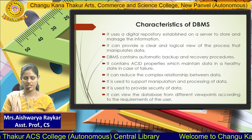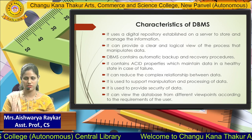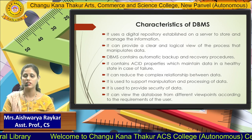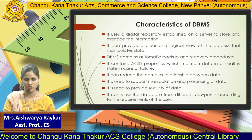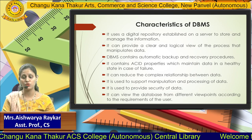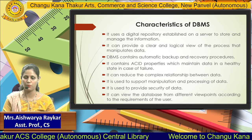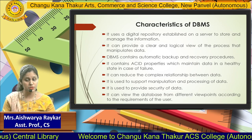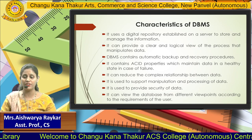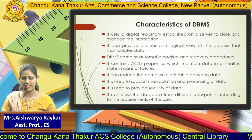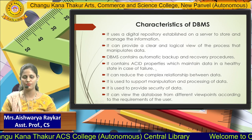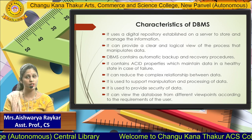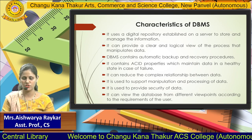Now let's have an overview of the characteristics of the database management system. The first characteristic is that it uses a digital repository established on a server to store and manage the information. Our data stored on the server will be managed using this digital repository. It can provide a clear and logical view of the process that manipulates the data. The DBMS contains automatic backup and recovery procedures, and it contains ACID properties which maintain the data in a healthy state in case of failure. In our upcoming lecture, we will be discussing ACID properties in detail, as they play a vital role in DBMS.